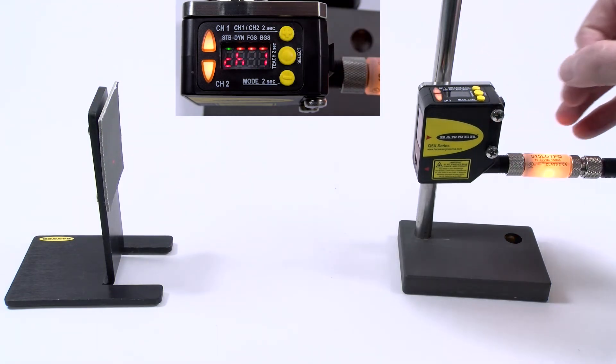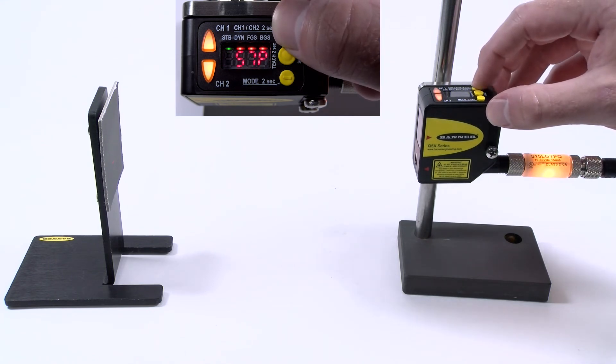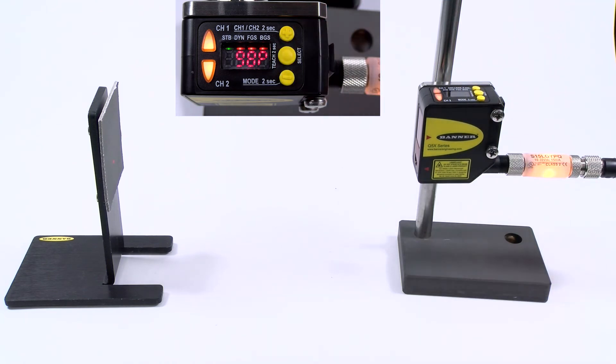To change the switch point threshold, tap either the plus or minus button once and then press or hold either button to toggle the threshold up or down to the desired number.